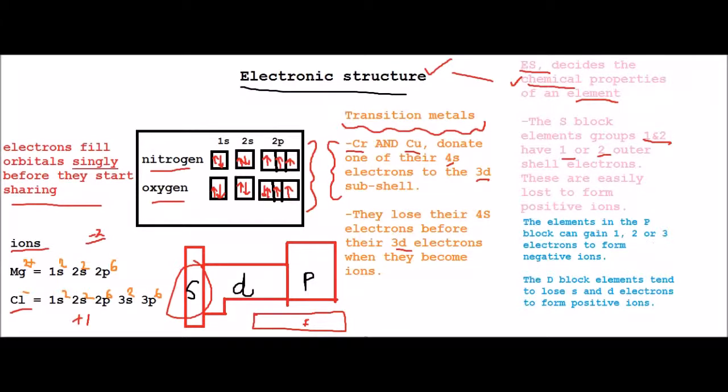The next thing is that the elements in the P block here can gain 1, 2, or 3 electrons to form negative ions.